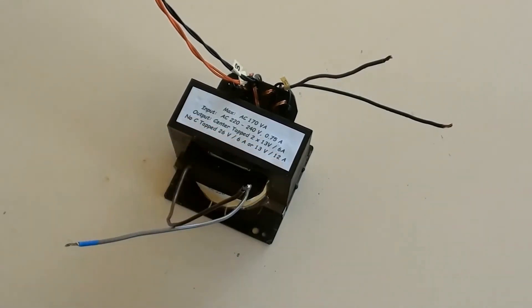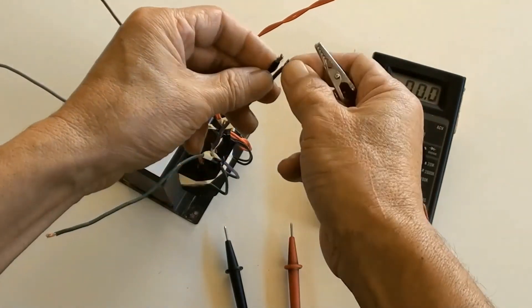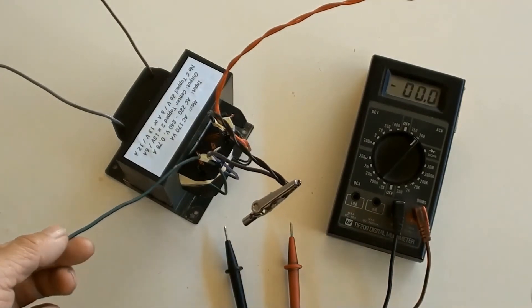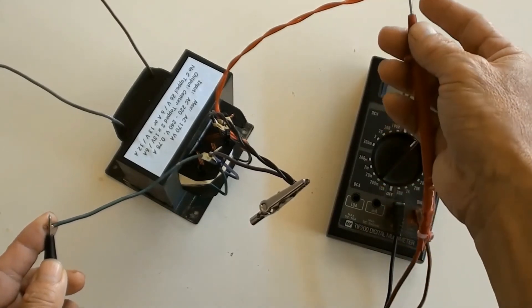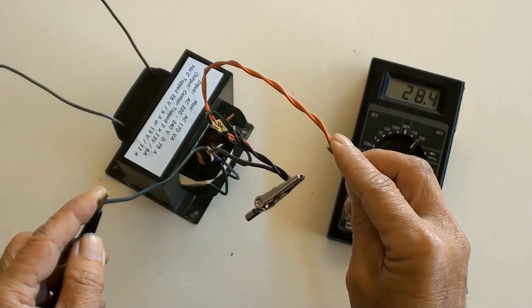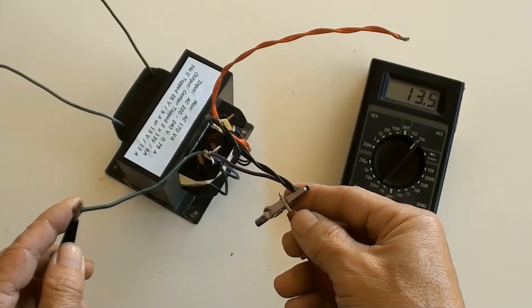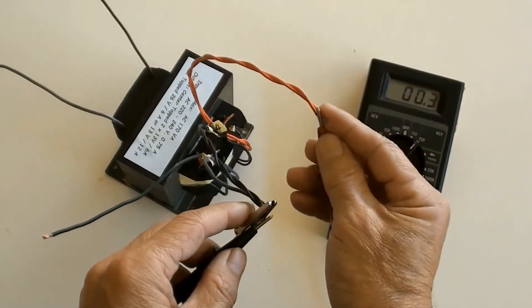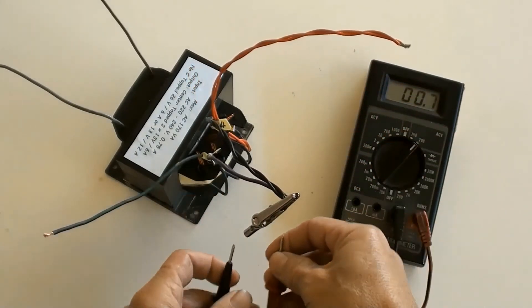One of the transformers functions is center tapped. This is the center tap terminal. Now testing voltage across center tap terminals without a load. It was 28.4 volt between terminals one and four, 13.8 volt between terminals one and two, and 13.8 volt between terminals three and four.